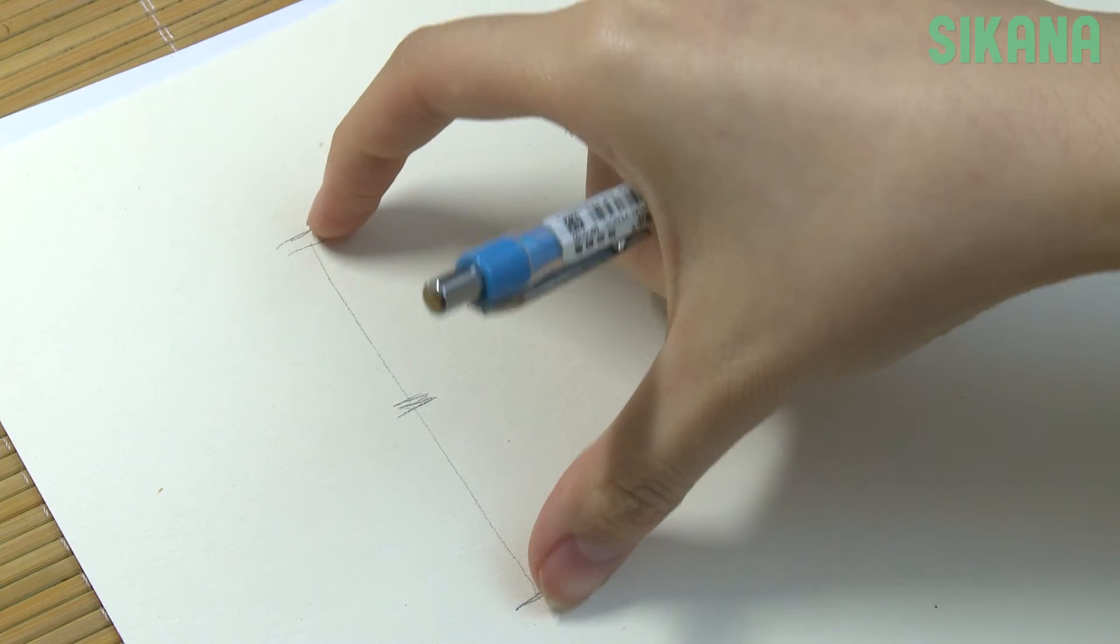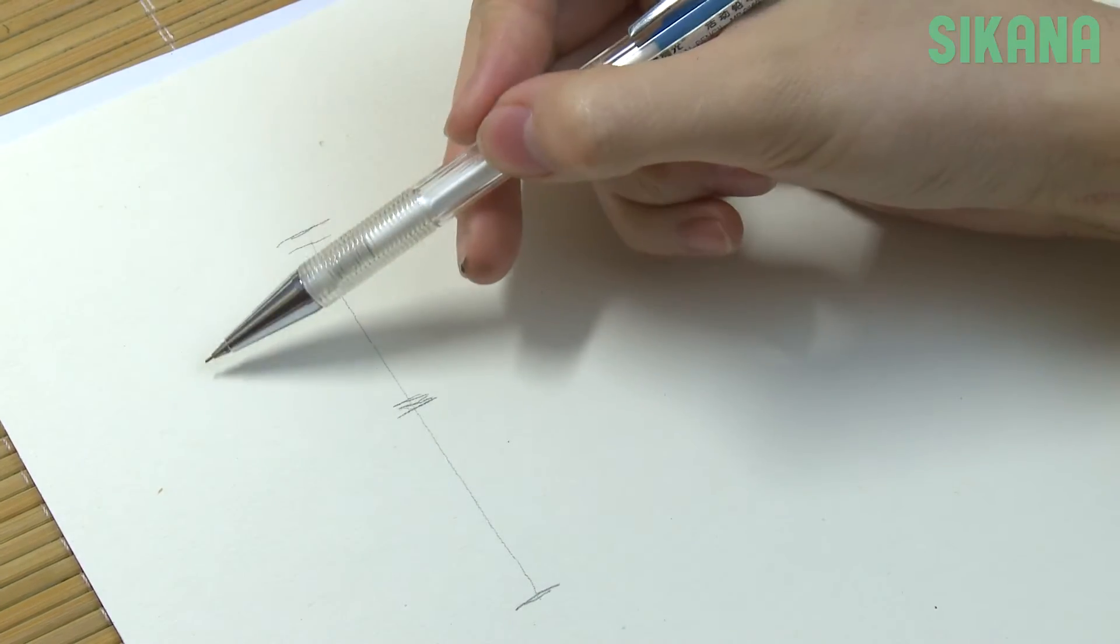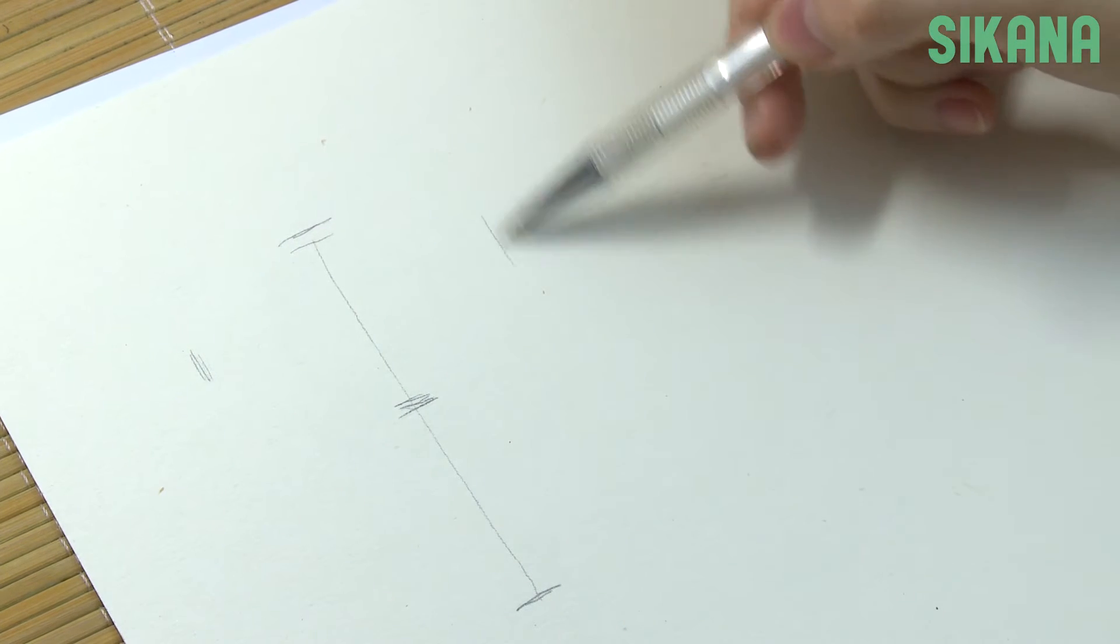First we'll draw his head. The size of the body is equal to the length of the head. Start by drawing the shape of the head.